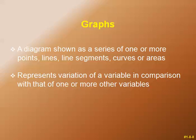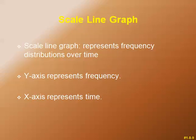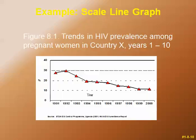What is a scale line graph? A scale line graph represents frequency distributions over time, where the y-axis represents the frequency and the x-axis represents the years or time. An example of a scale line graph is the trends in HIV prevalence among pregnant women in country X for the given years.